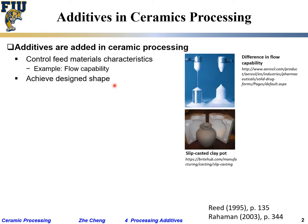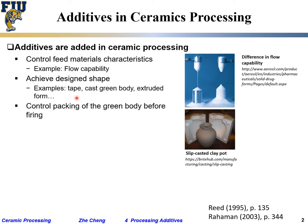Another purpose is to achieve a designed shape. For example, in slip casting you pour a liquid slurry into a mold to get a certain shape. In all of these processes you often have to add additives — polymers and solvents — to achieve it. For example, tape casting creates the green body, or you can extrude complex shapes.